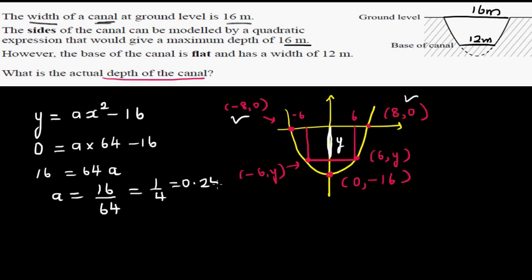So I can say well, the equation of the canal is going to be 0.25 x squared minus 16.